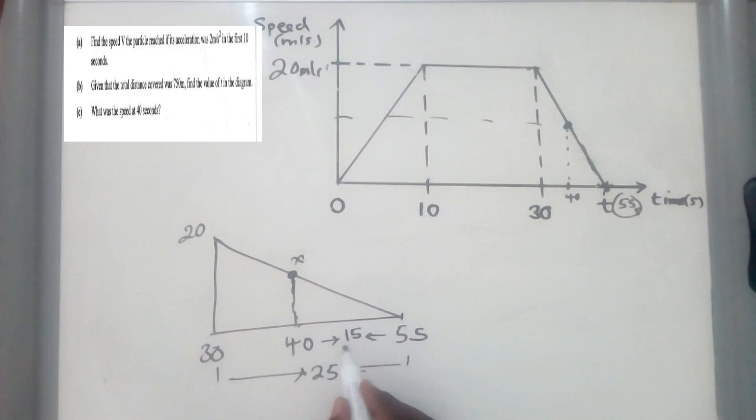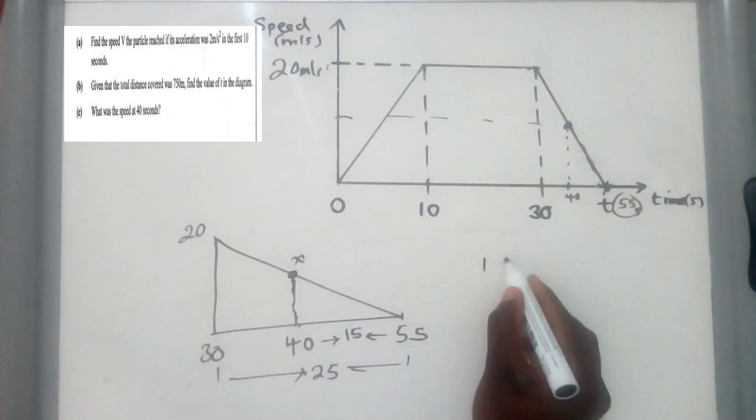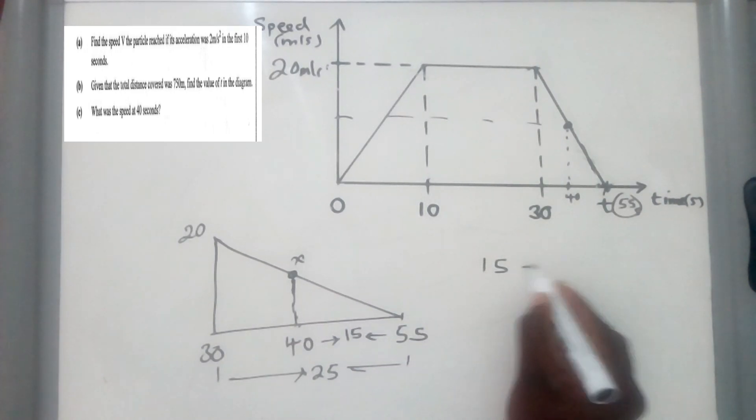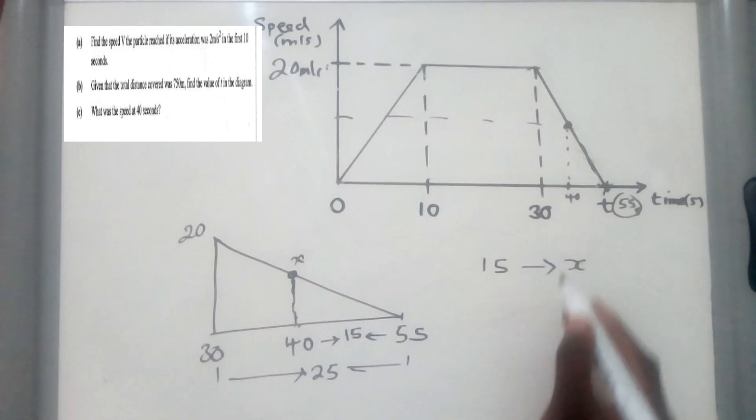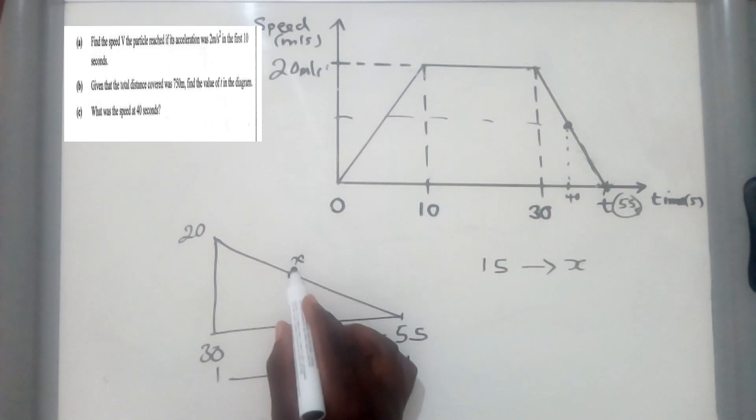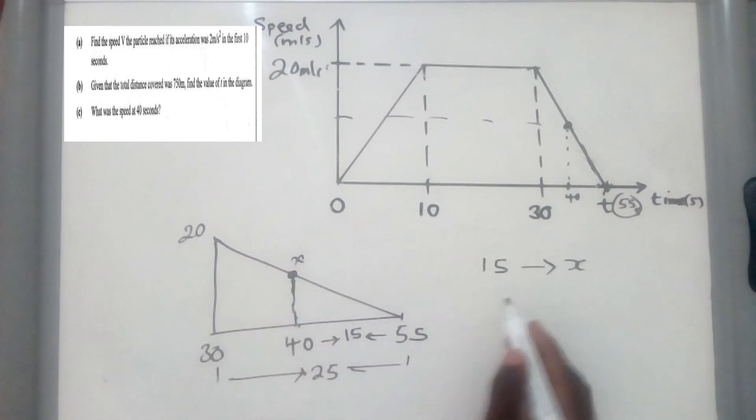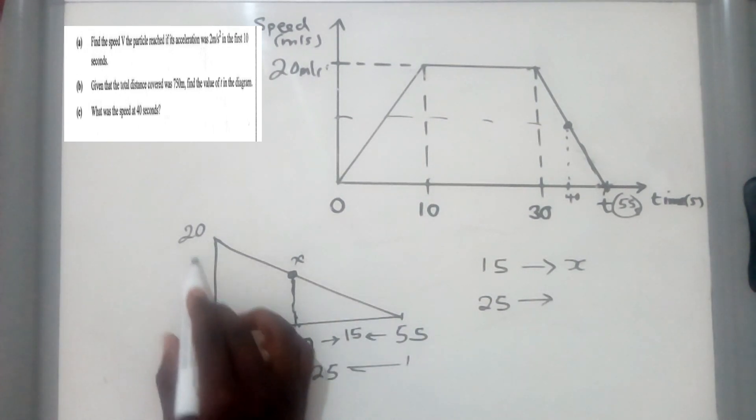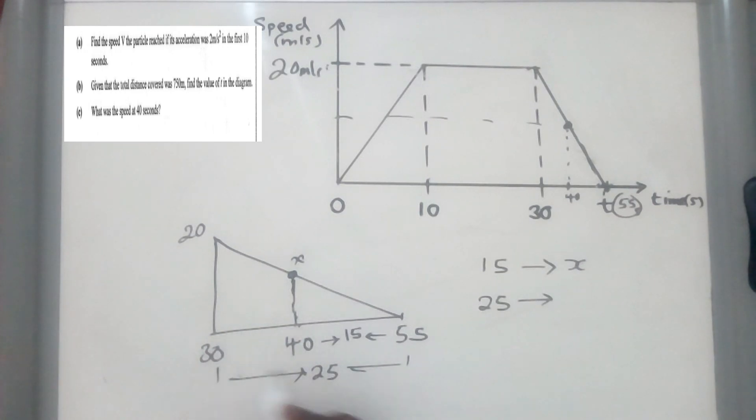So now we'll start, we'll say this 15 is for the small triangle. 15 is for the small triangle. We'll move with x. This x is the speed for the small triangle. And then this 25 will move with the speed for the bigger triangle because 25 is the difference here for the bigger triangle. So it will move with 20.